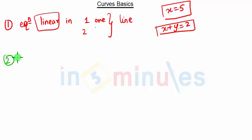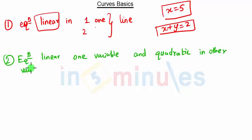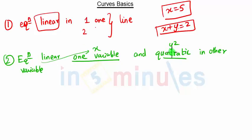Rule 2: the equation is linear in one variable and quadratic in the other. So whenever we have the equation linear in one variable and quadratic in another — say x is linear and y² is quadratic — whenever one variable is linear and the other is quadratic, that equation always represents a parabola.